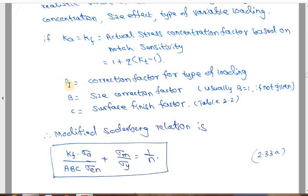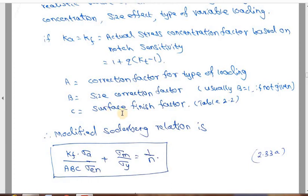Other parameters include: factor K_A, which is a correction factor for type of loading — whether it is reversed axial, reversed bending, or reversed torsional loading. Factor K_B is the size correction factor; usually K_B = 1 if not given otherwise. Factor K_C stands for the surface finish factor: as surface roughness increases, the K_C value changes and the endurance limit will be different. These are the three parameters K_A, K_B, K_C, plus the stress concentration factor K_F.